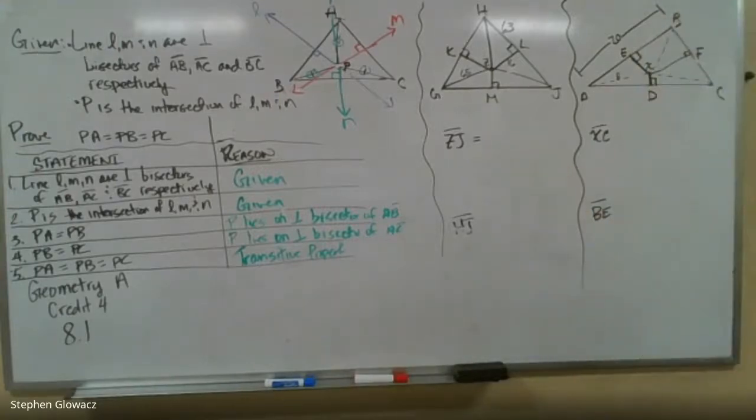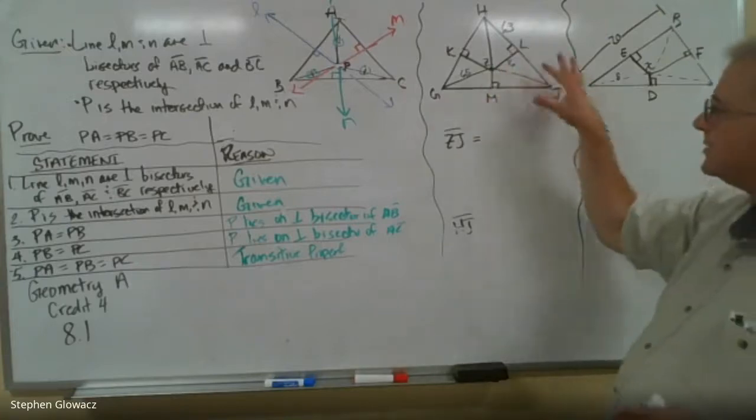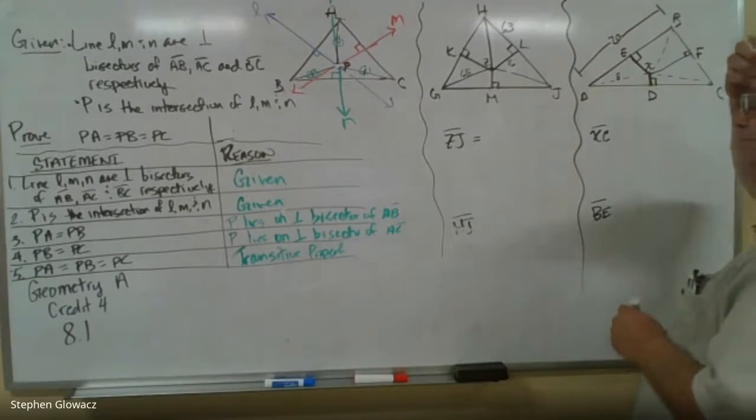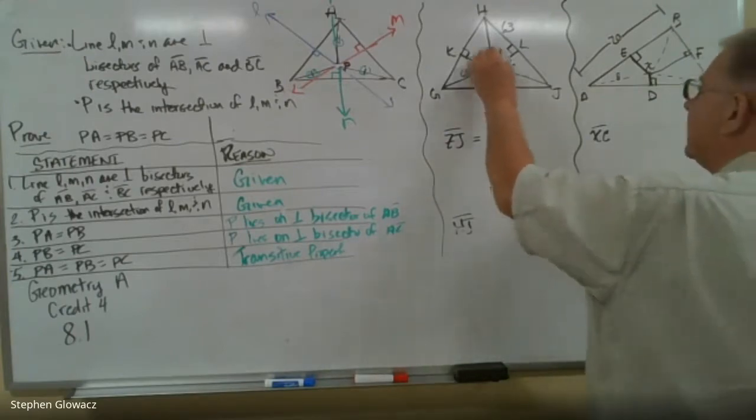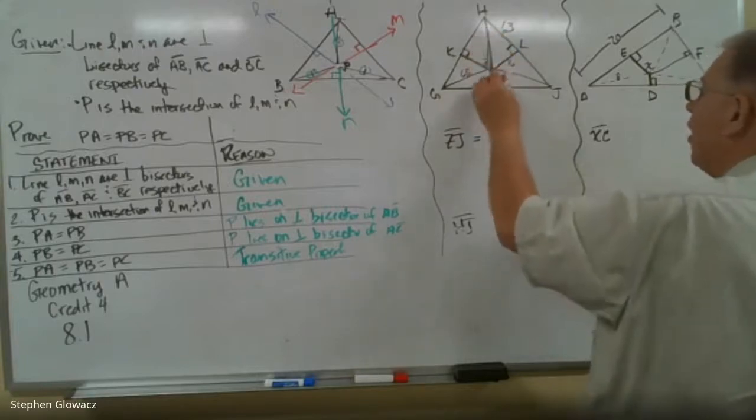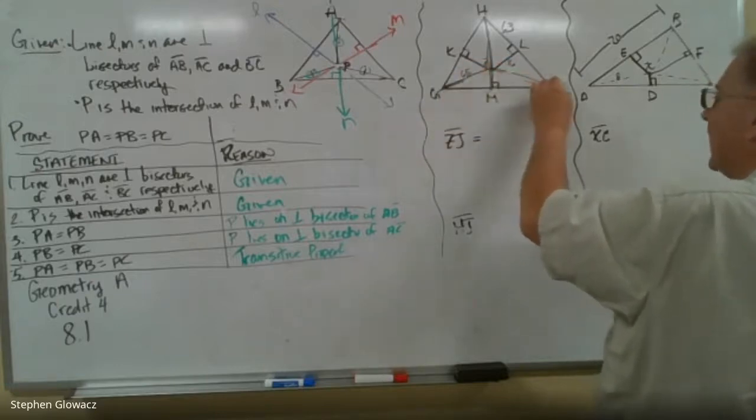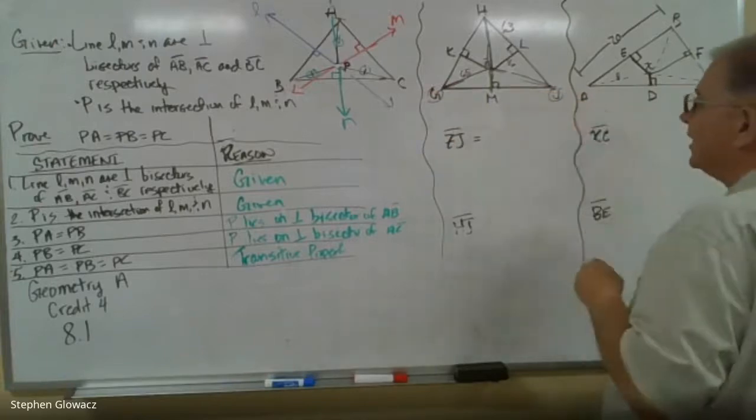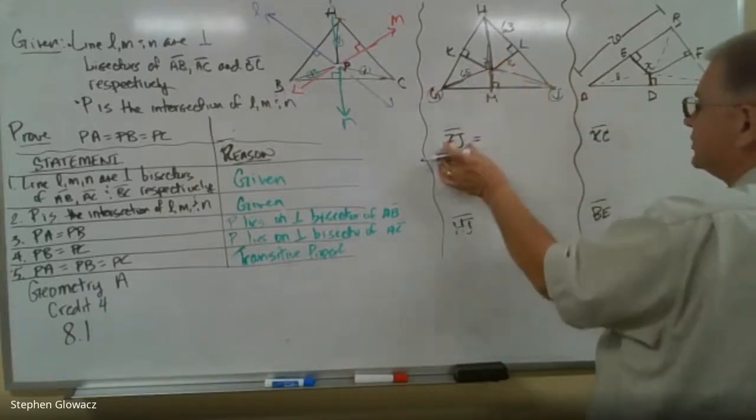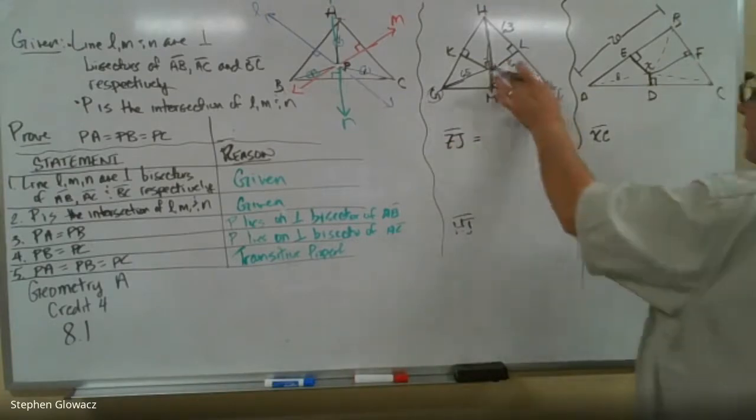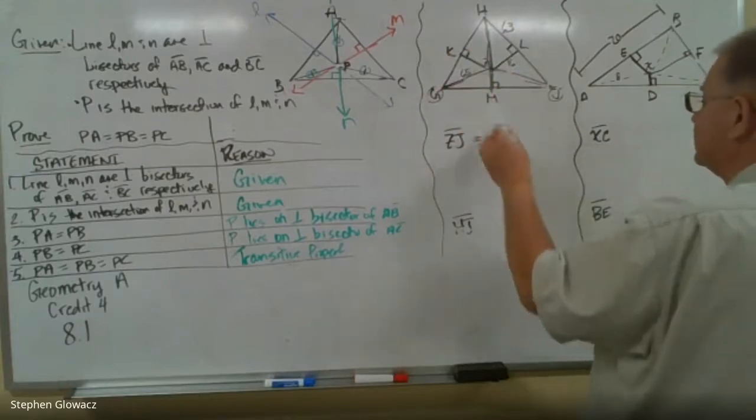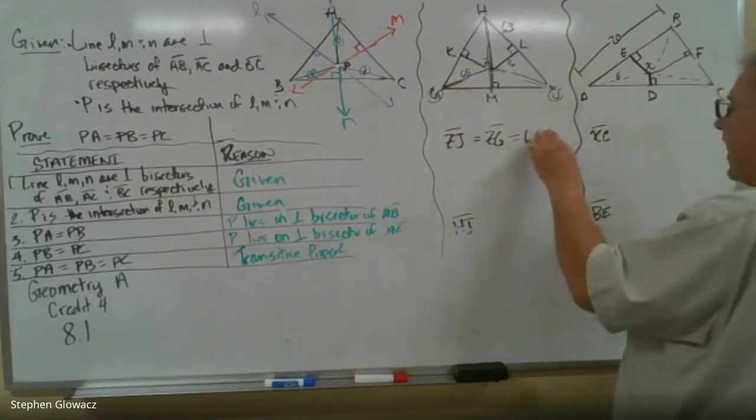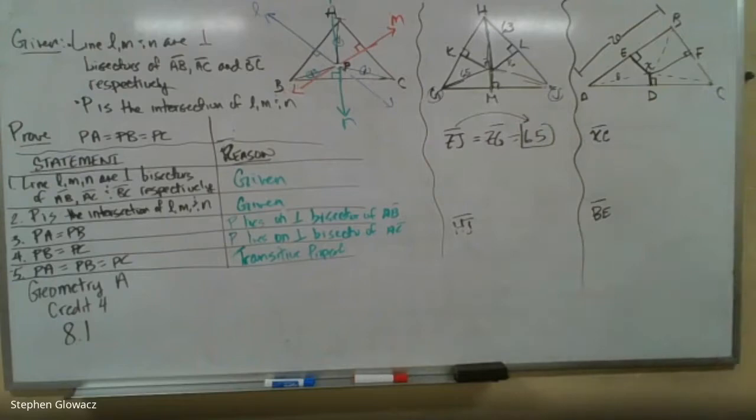On page 41, they asked us to find the length of ZJ. This here is a perpendicular bisector, so any point on this line is going to be the same distance to the endpoints of the segment that it's bisected. Any point on this line will be the same distance to both G and J. So if we're trying to find the length of ZJ, ZJ would be the same measurement as ZG. We know what ZG is, ZG is 65. So the measurement of ZJ would be 65.